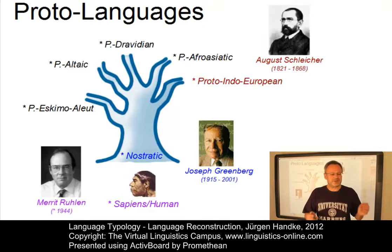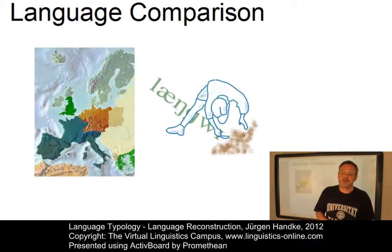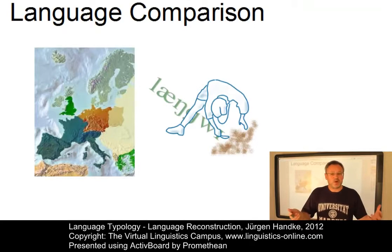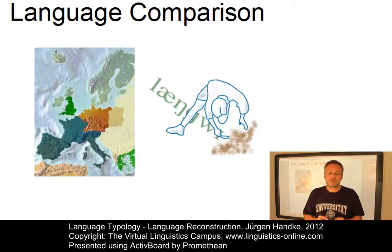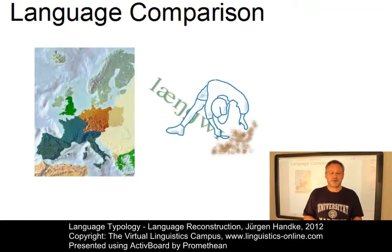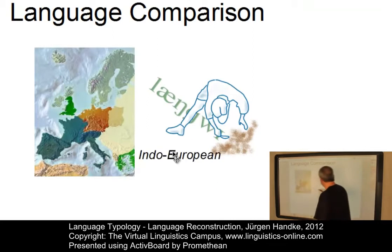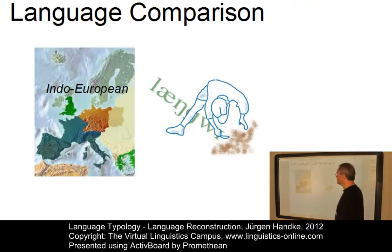Let us now look at the principles of reconstructing such proto-languages in more detail. In the 18th century, scholars began to compare groups of languages in a systematic way, to see whether there were any correspondences between them. Evidence of a common origin for groups of languages was readily available in Europe, and by the beginning of the 19th century, the hypothesis emerged that there was once a language from which the many languages of Eurasia derived — this proto-language came to be called Proto-Indo-European.